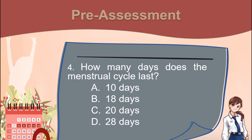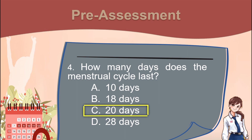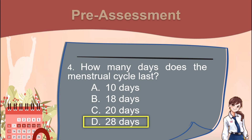Number 4. How many days does the menstrual cycle last? A. 10 days. B. 18 days. C. 20 days. D. 28 days.